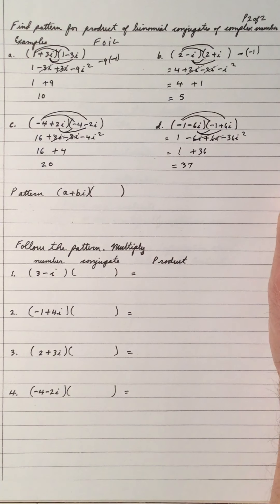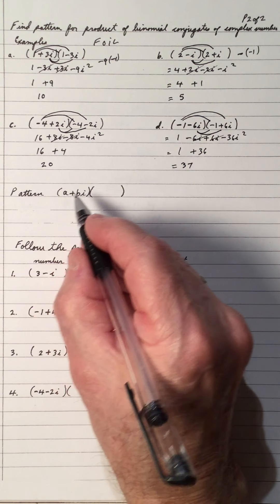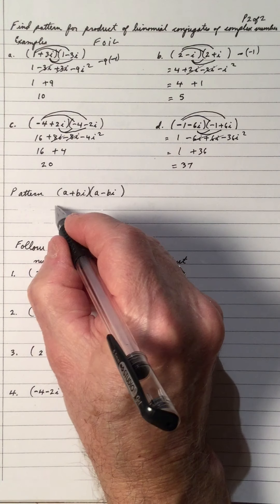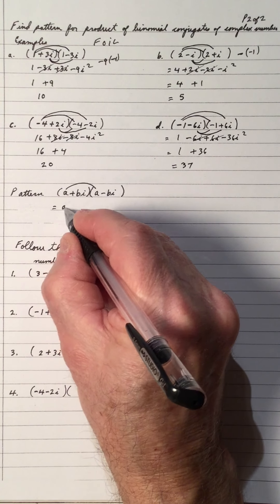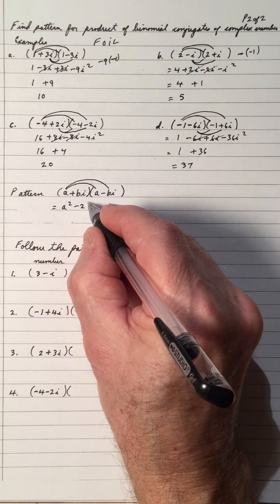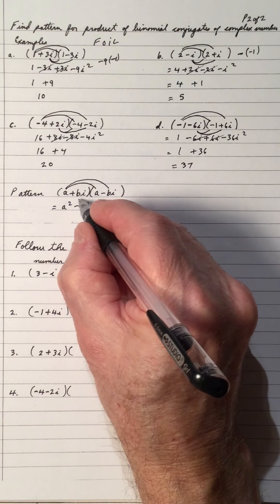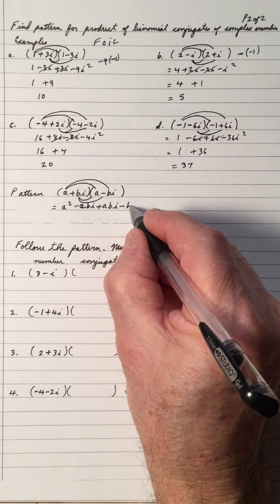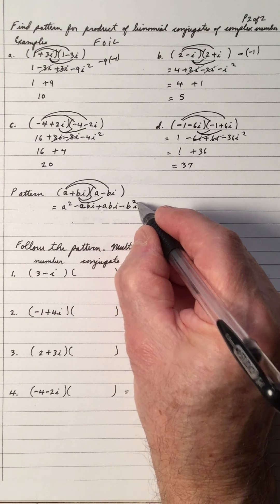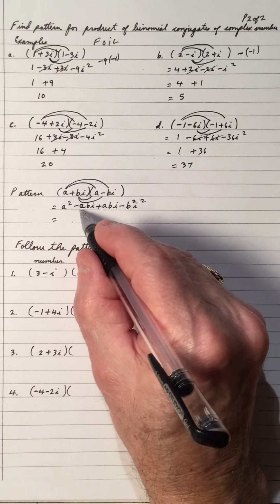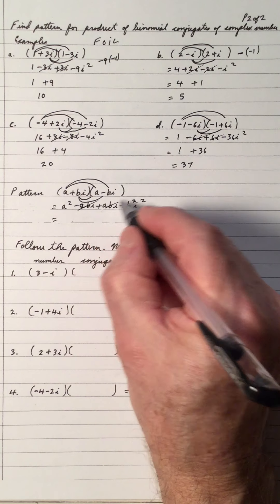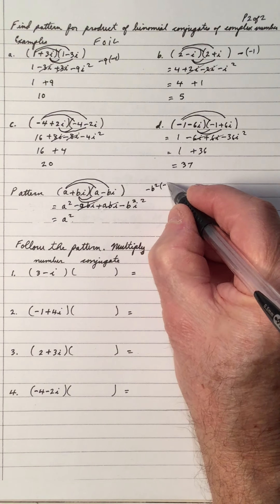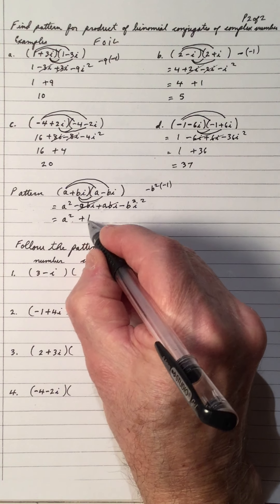So the general pattern: if we multiply conjugates a plus bi and a minus bi, using FOIL the first is a squared, the outside is negative abi, the inside is positive abi, and the last is negative b squared i squared. The middle terms cancel because they are equal and opposite. This leaves a squared minus b squared times i squared. Since i squared is negative 1, that becomes a squared plus b squared.